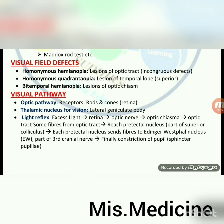Visual pathway: receptors — rods and cones present on retina. Thalamic nucleus for vision: lateral geniculate body. Light reflex: excess light goes to retina, then optic nerve, then optic chiasm, then optic tract. Some fibers from optic tract reach the pretectal nucleus (part of superior colliculus). Each pretectal nucleus sends fibers to the Edinger-Westphal nucleus, part of the third cranial nerve (oculomotor nerve), then finally constriction of pupil via sphincter pupillae.